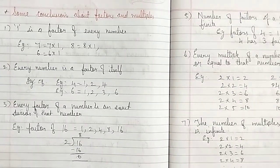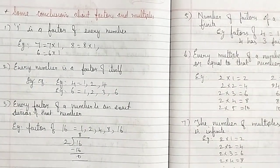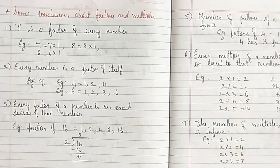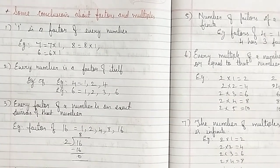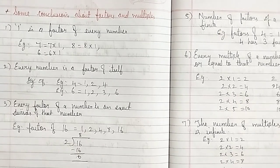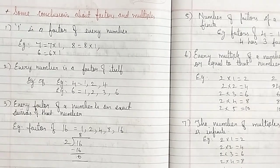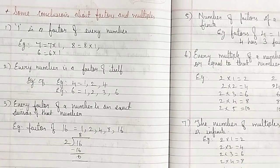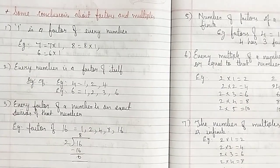Now a conclusion about factors and multiples. First: 1 is a factor of every number. In every multiplication table, 1 appears as the first entry — 7 ones are 7, 8 ones are 8, 6 ones are 6, 5 ones are 5. In all the multiples, 1 will come. So 1 is a factor of every number.